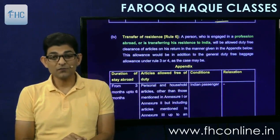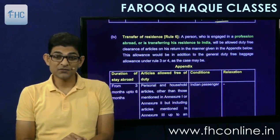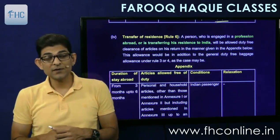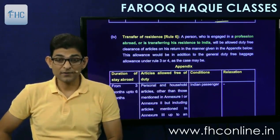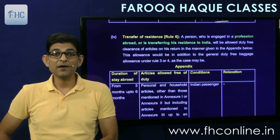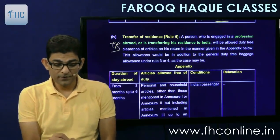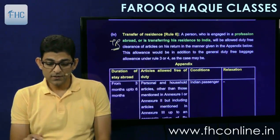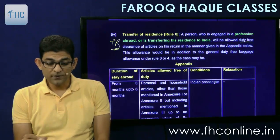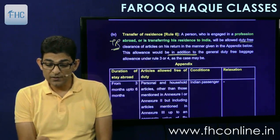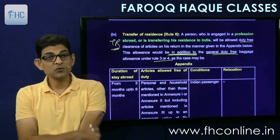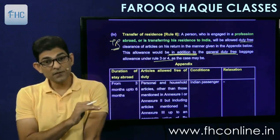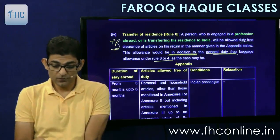The third topic is Transfer of Residence (TR). If you transfer your residence back to India — for example, after staying abroad for 20 years, you are coming back and are transferring your residence — you will be allowed duty-free clearance of articles on your return as per the appendix. This allowance is in addition to the general exemption under Rule 3 or 4, so the 50,000 or 15,000 general exemption is available to you apart from the TR exemption.